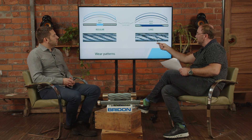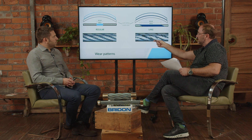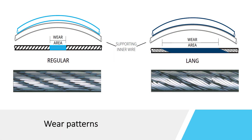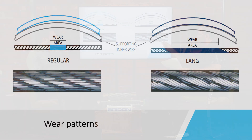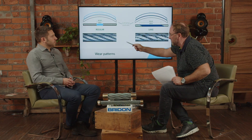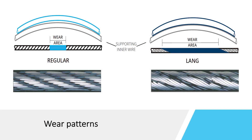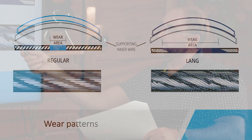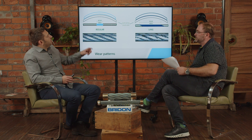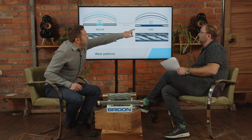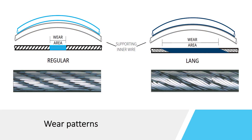What is the importance of the different types of lay? They represent different rope technologies. With a Lang lay rope, the single wires in the outer strand follow the same direction, so the complete strand has a bigger contact area with the sheave. This means the wear resistance of the outer wires in a Lang lay rope is much higher than in a regular lay rope. The blue areas shown here illustrate that the same amount of force is spread over a larger contact area with a Lang lay rope.